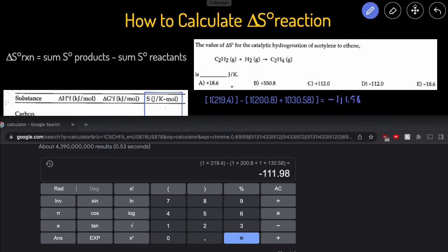And then that gives us negative 111.98. So that means that the answer for this question is going to be D, just rounded to negative 112. Let's just make sure this makes sense.